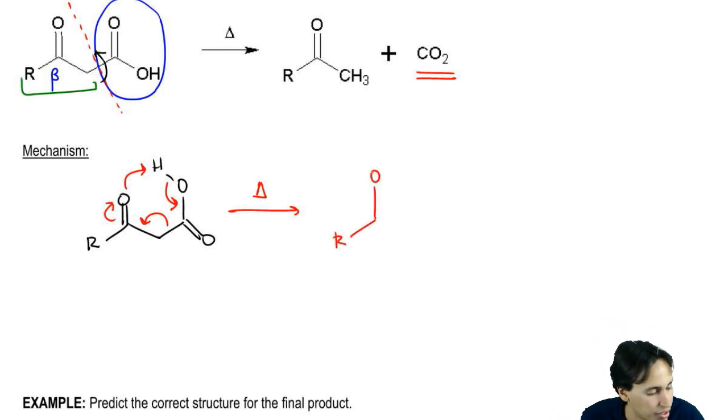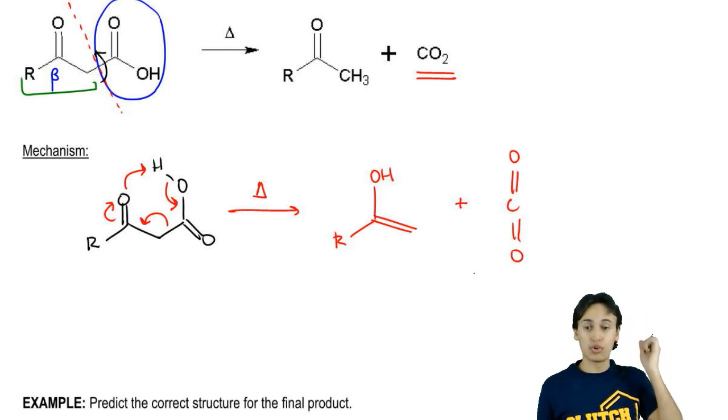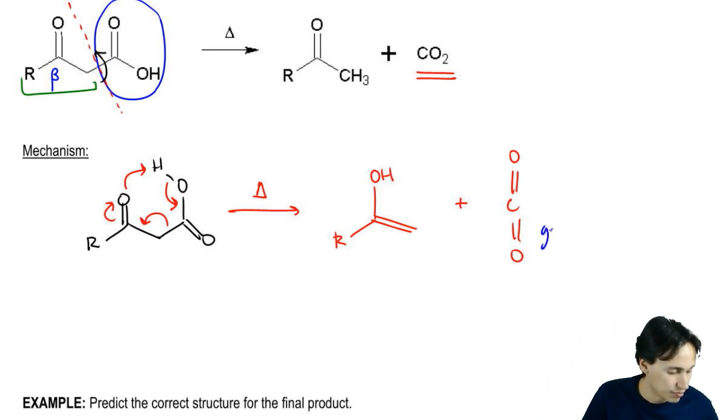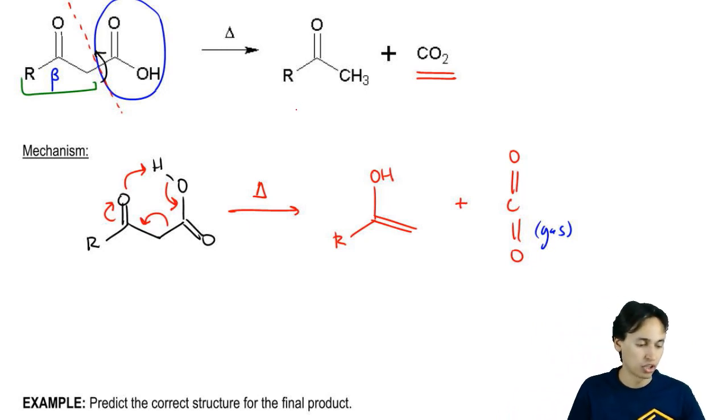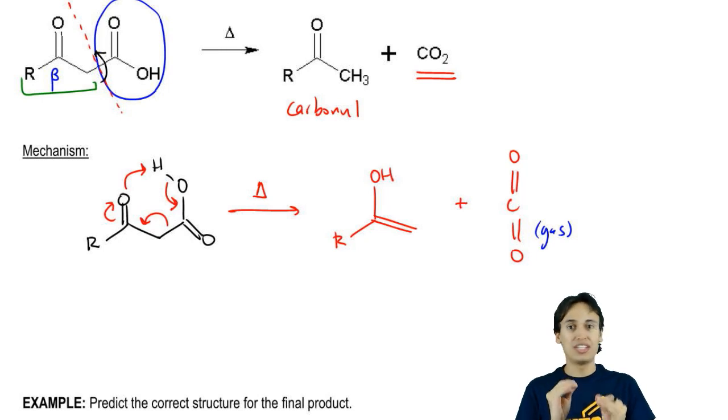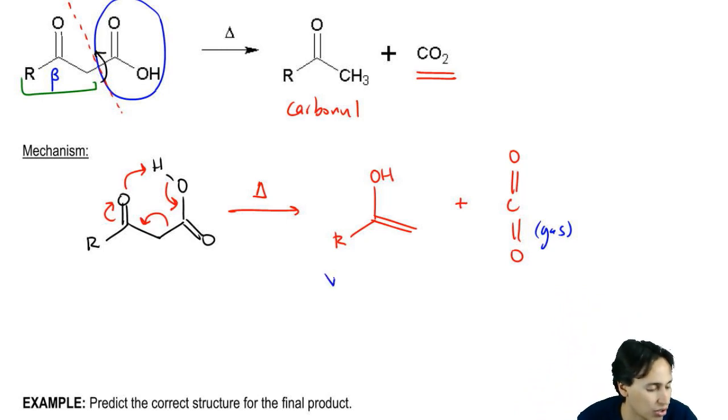Now it makes sense why I get the CO2 gas. It should even make sense why the carboxylic acid is gone. What might be a little confusing for you is that I told you that you get a carbonyl from this and right now I have an alcohol. That doesn't seem to make sense. This is something that we're going to talk about a lot more if you haven't talked about it yet, but there's something special about vinyl alcohols. Does anyone remember? What's special about vinyl alcohols?